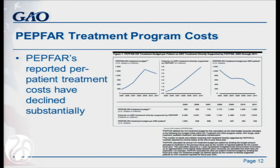These approximations are used by PEPFAR with four budget codes, and they only include the costs that are specific to PEPFAR for those people who are directly supported on ARV treatment. These costs will vary by country. PEPFAR recently has started to estimate the cost of comprehensive HIV treatment, which is a broader range of services than just the four budget codes, and these estimates show similar trends in decreasing per patient treatment costs.